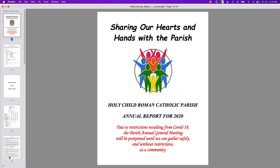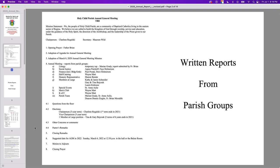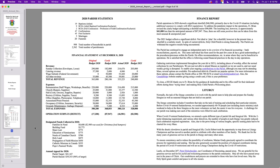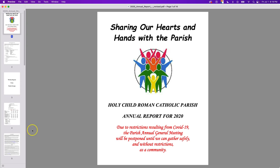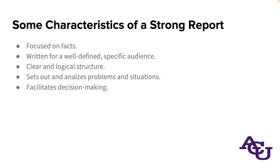We have a PDF here — the parish annual report from the Holy Child Roman Catholic Parish. We have the minutes because this was presented in a meeting, and written reports from the different parish groups. One of the ways it's been organized for clarity is by dividing it into different sections: the finance section, the liturgy section, social justice committee, education, spiritual growth, and so forth. That's partly about knowing the audience — while parishioners are probably interested in the parish as a whole, many might be more interested in one area. Having a section for greater detail is really helpful, and dividing into these different functional entities is a clear and logical structure.